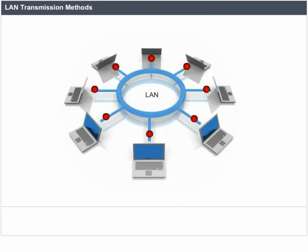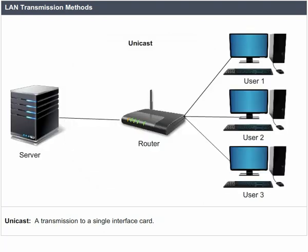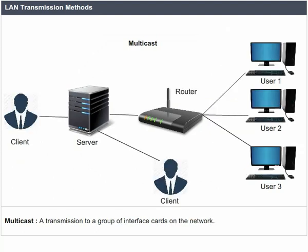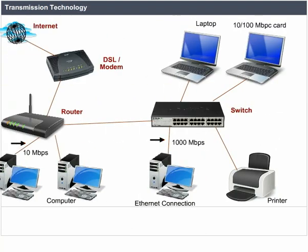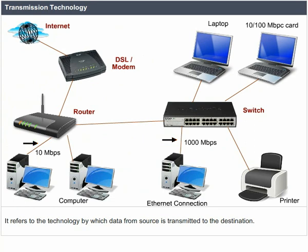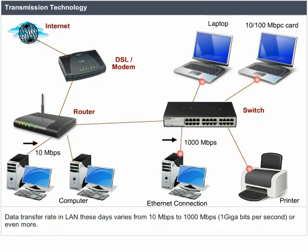LAN Transmission Methods. LAN data transmissions fall into three classifications: Unicast — a transmission to a single interface card; Multicast — a transmission to a group of interface cards on the network; Broadcast — a transmission to all interface cards on the network. In each type, a single packet is sent to one or more nodes. Data transfer rates in LANs these days vary from 10 Mbps to 1000 Mbps (1 Gigabit per second) or even more.